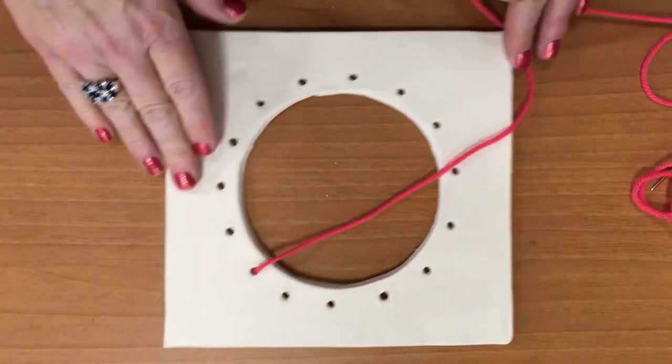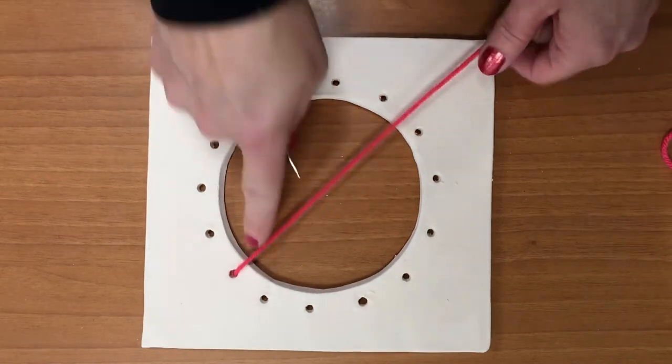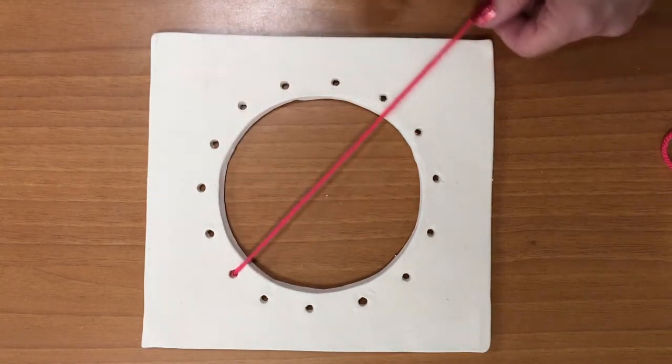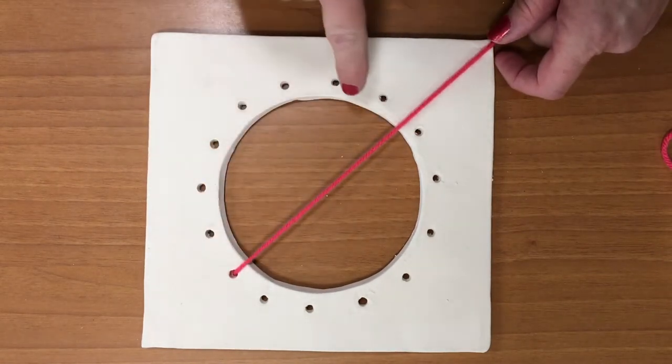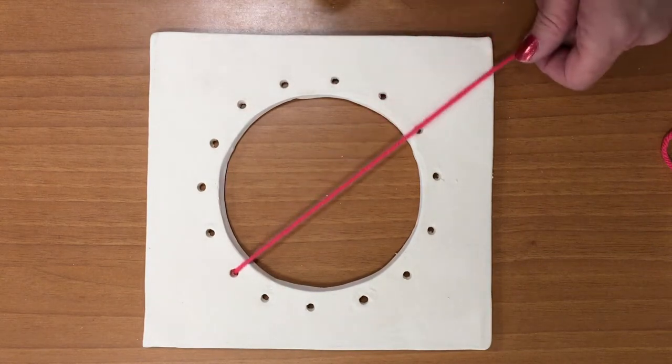So now you can see I have gone up through this hole. So now we're going to find a hole that's approximately diagonal. Now since you have an odd number of holes, you won't be exactly diagonal.